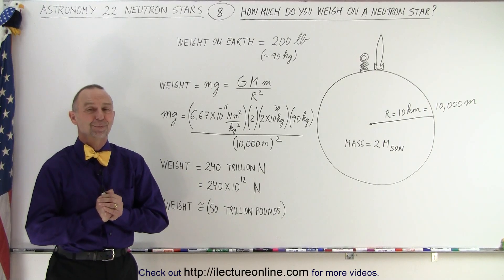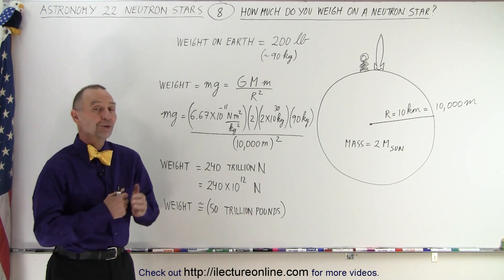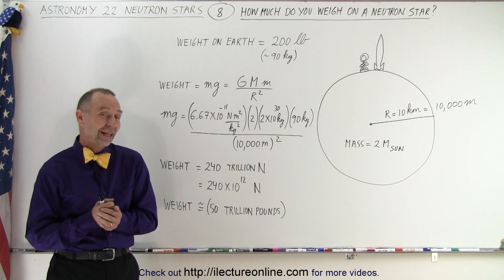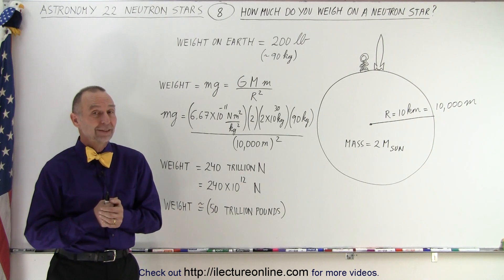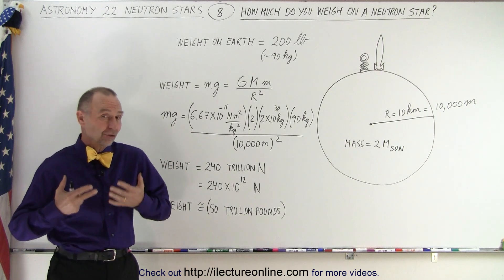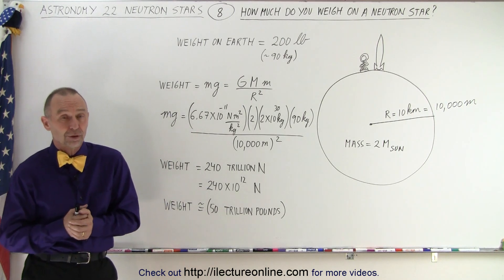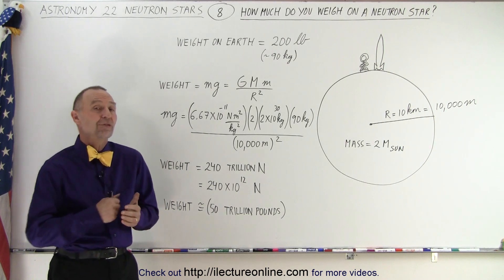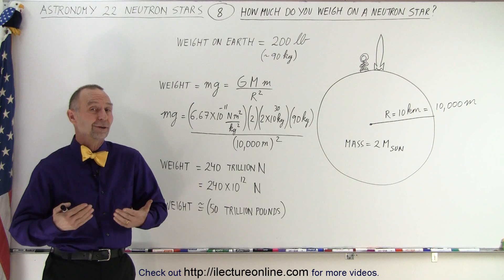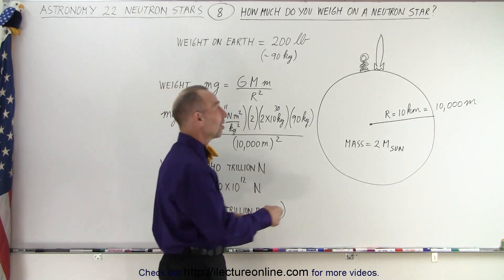Welcome to ElectronLine. How much would you weigh if you were to land on a neutron star? Landing on a neutron star is not as easy as you think. It's not even easy to land on Mars, because the gravitational attraction on Mars is relatively large and there's not a lot of atmosphere to slow you down. There would be no atmosphere to slow you down and the gravitational force would be much greater than on Mars. So let's say that you manage to land on a neutron star.